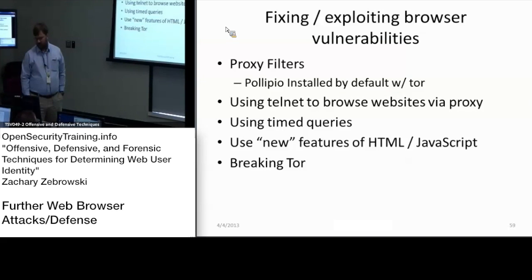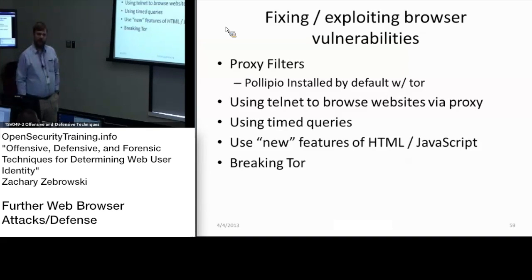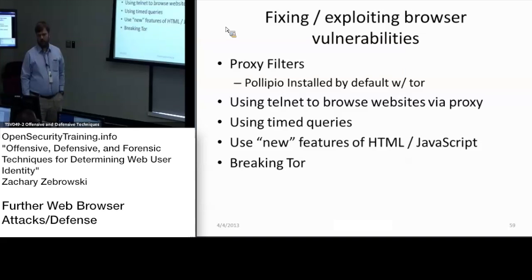Polipo, which is a web filtering software, is installed by default when you install the web browser package with Tor. The issue is that while Polipo does mostly all the right things, there are still ways you can have attacks against it because it's a known version. If it's a known version of bundled software, you could craftily write exploits to take advantage of that.